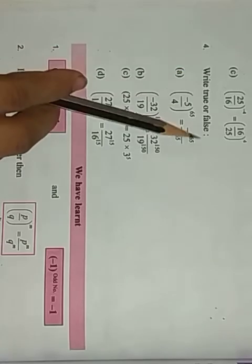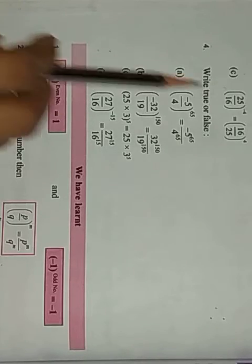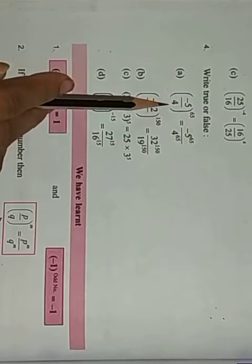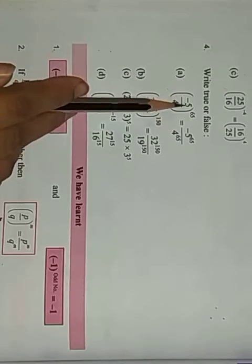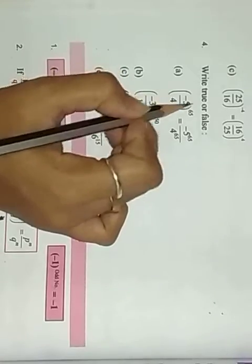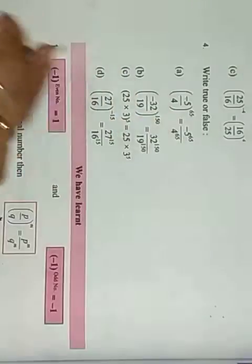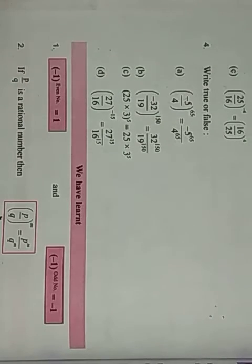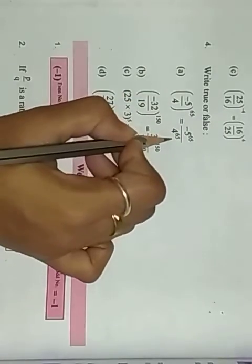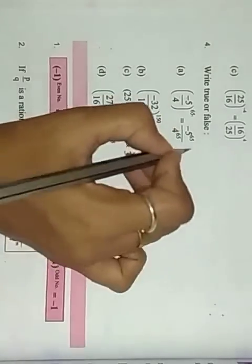Then question number four: true or false. We have to write true or false. Question A: (−5/4)^65 equals (−5)^65 / 4^65. If we open the bracket, the minus will also get the power 65 — meaning (−1)^65. Since 65 is an odd number, (−1)^65 = −1, so minus remains. And 5^65 and 4^65 also appear. So this statement is true.